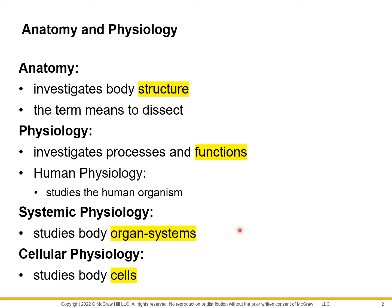Next, we're given the term systemic physiology, wherein we study the body organ system — looking into different organs and how they work together to perform a similar function, and how all those different organ systems maintain the human body. We also have cellular physiology, which studies body cells — their functions and how they perform those functions.